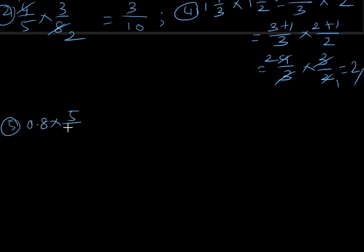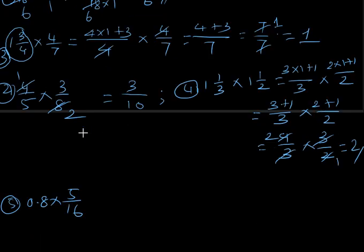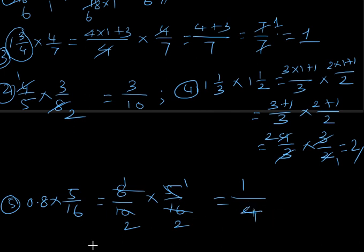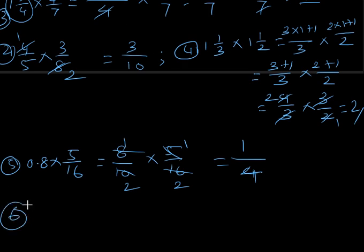The fifth one is 0.8 × 5/16. To handle the decimal, I convert 0.8 into a fraction: since there is one digit after the decimal point, it becomes 8/10. So the calculation is 8/10 × 5/16. Both 5 and 10 are in the 5-times table, and both 8 and 16 are in the 8-times table, so we cancel those. The result is 1×1 over 2×2 = 1/4.